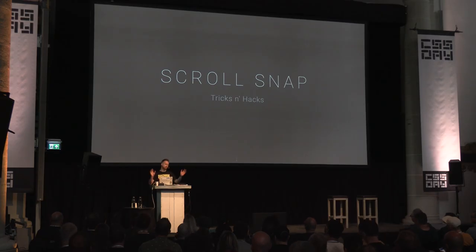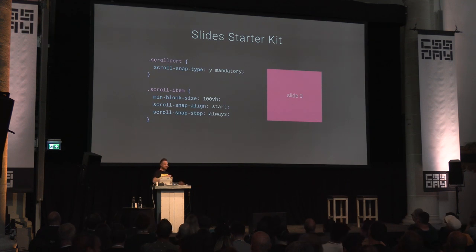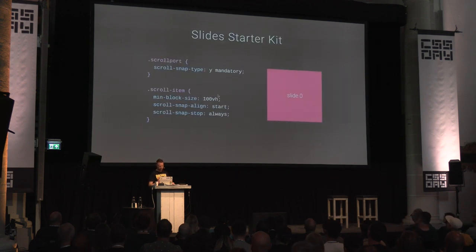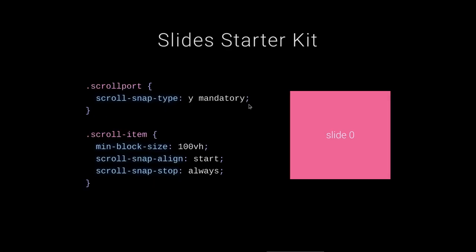Here's a slide starter kit. Scroll snap is great for slides — I've been making slides with it. The scroll port has scroll-snap-type: y mandatory, requiring it to find snap destinations. Each slide item is 100vh, with scroll-snap-align: start and snap-stop: always — preventing people from whipping through your presentation. No matter how hard you flick, it goes one slide at a time.